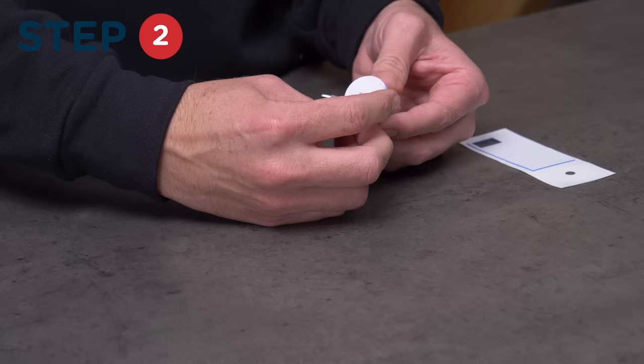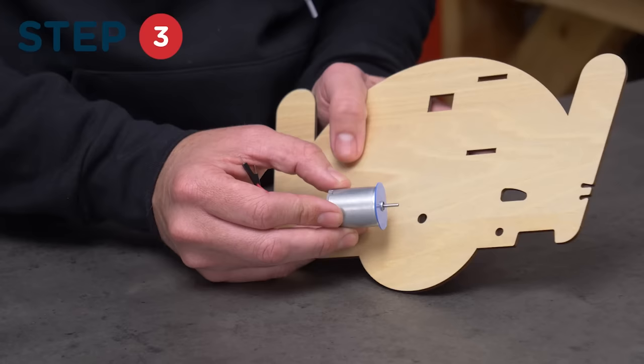Peel the second paper backing off the foam, then locate the wood launcher piece and slide the motor shaft through the center hole in the back of the launcher.